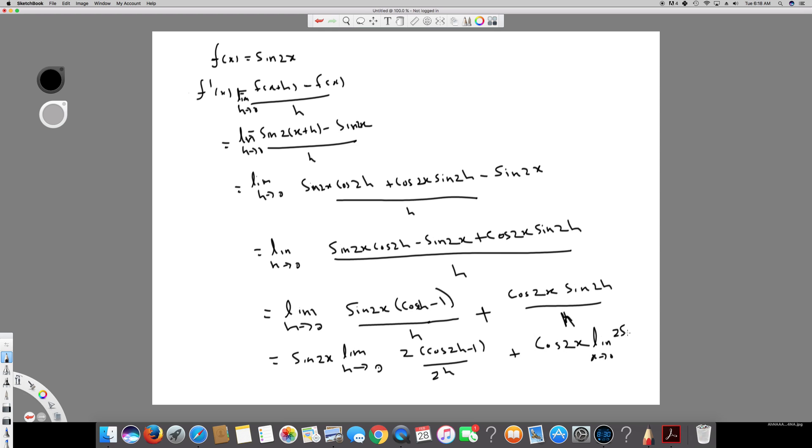Sine 2h over h. So I continue here, so I can now get rid of limit because I don't, I'm not going to have the h anymore. So I can get rid of the limit.